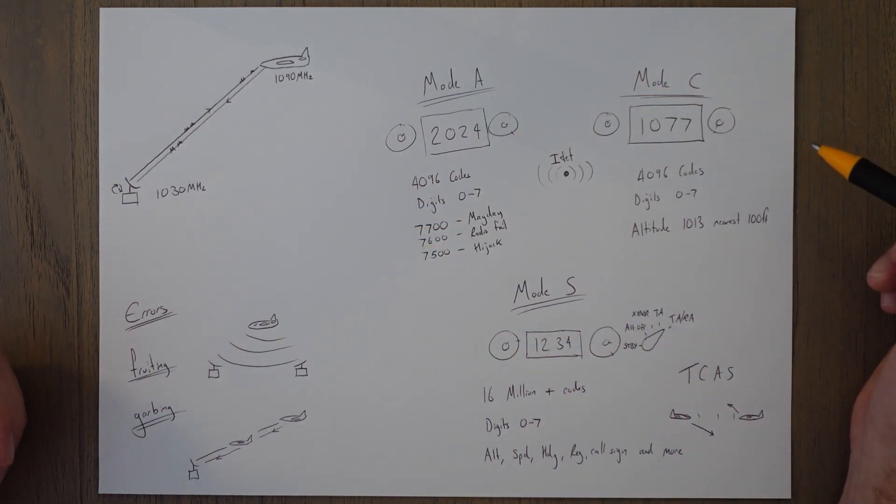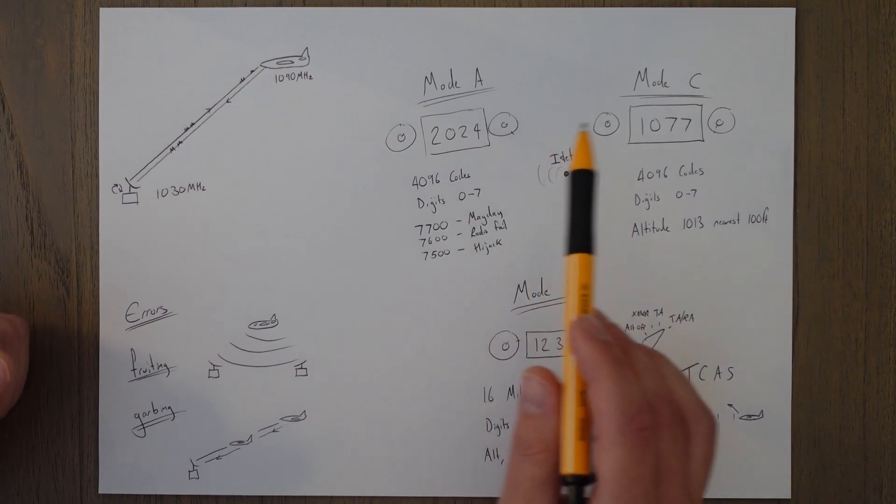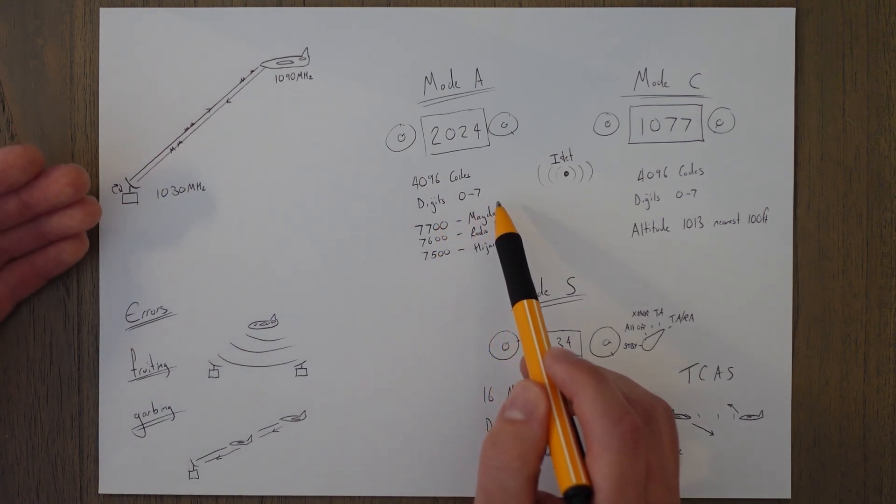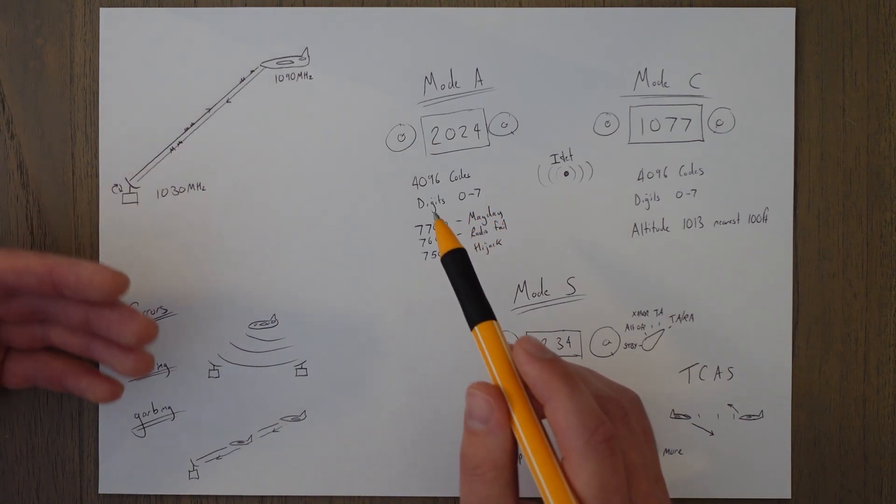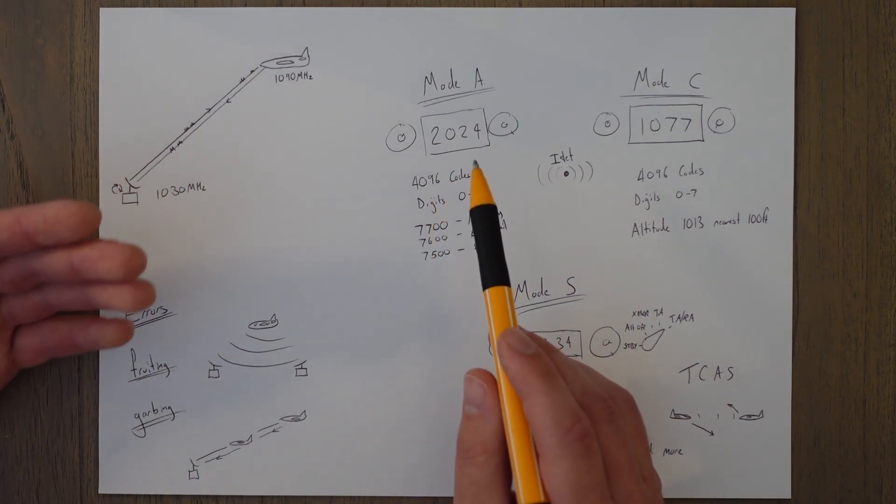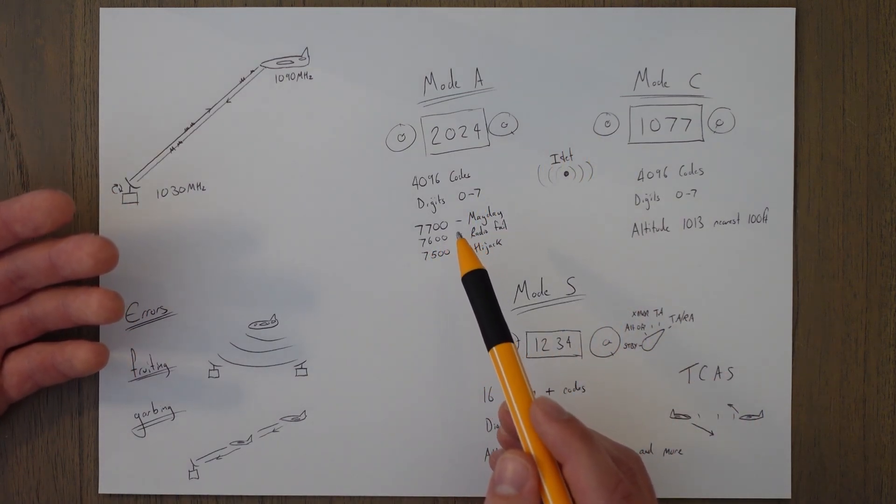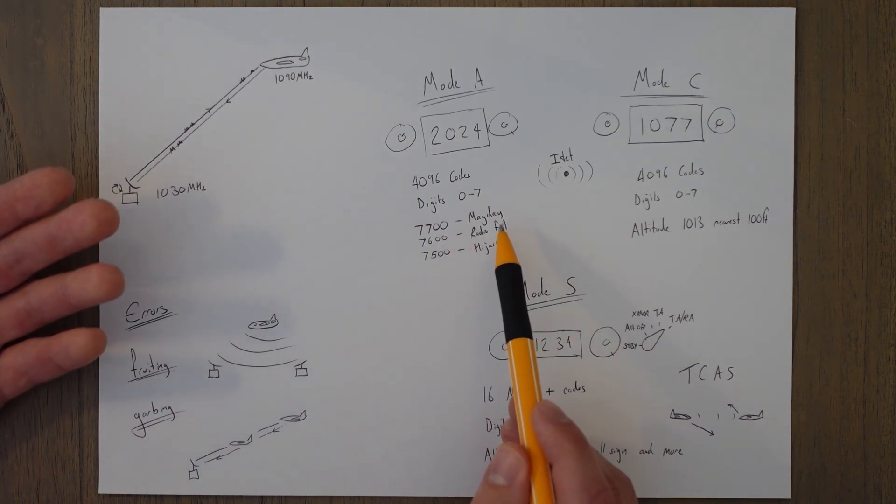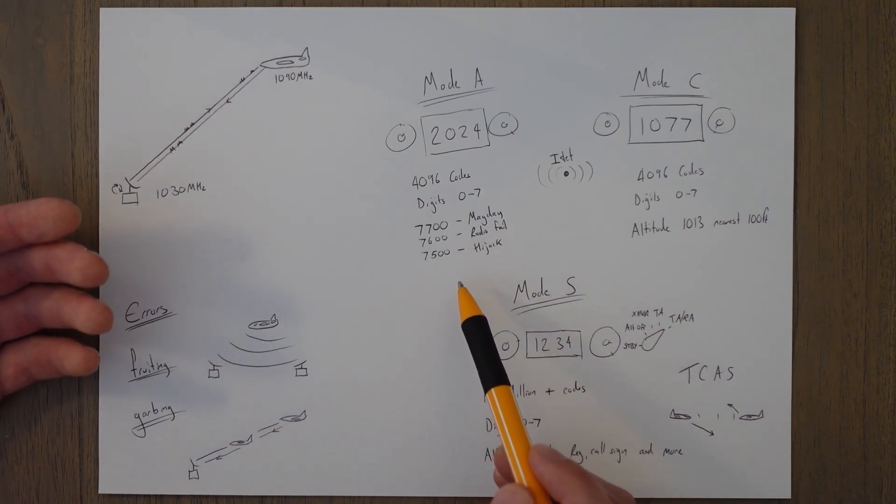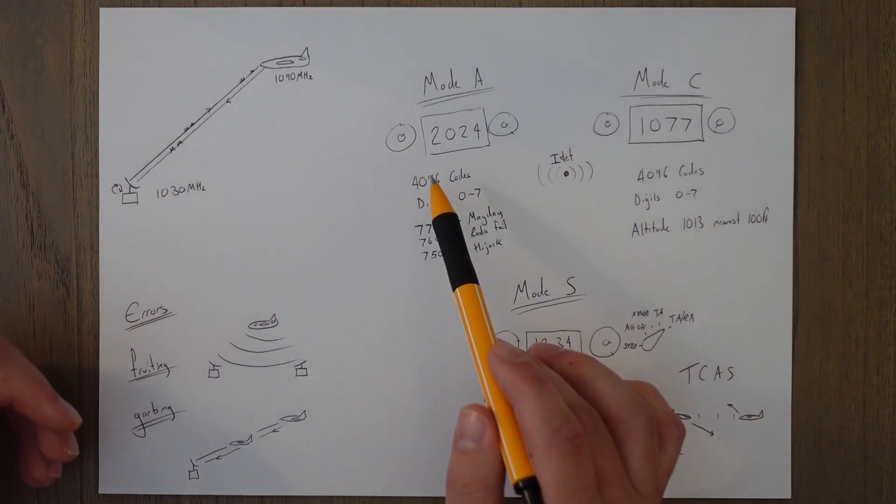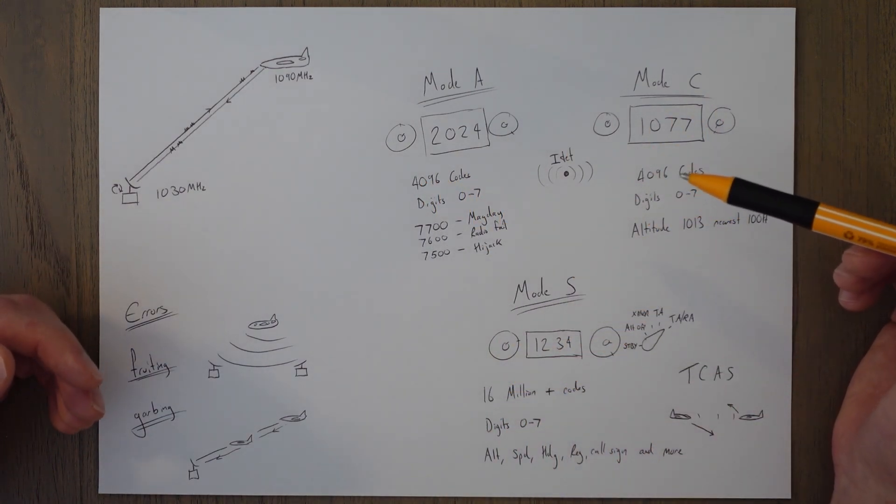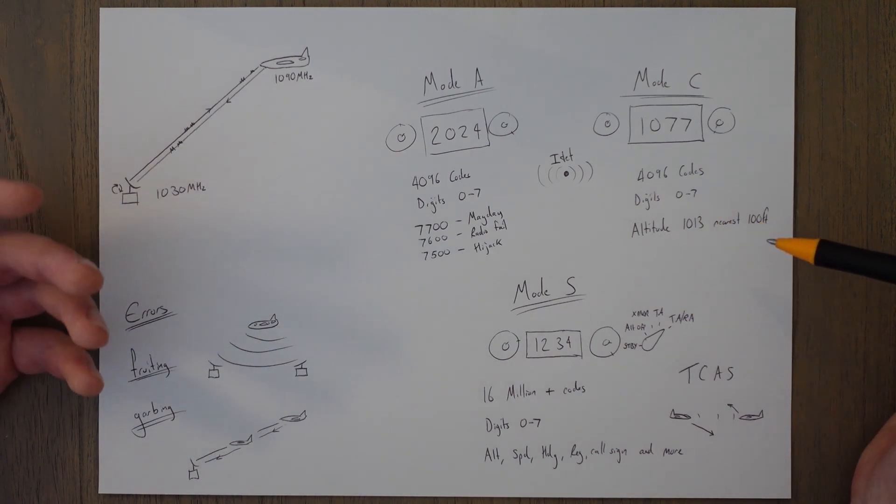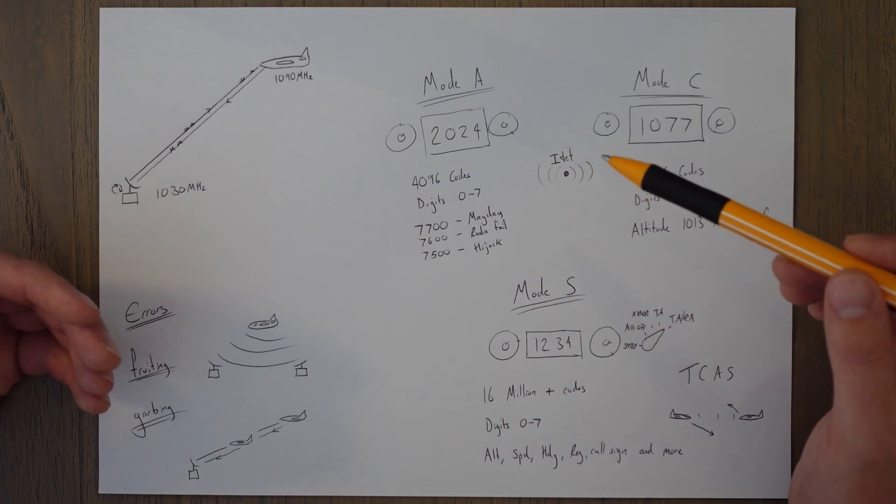You have three different modes of transponder: you've got Mode A, C, and S. A is the most basic. There's 4096 different codes we can use from using digits 0 to 7. In Mode A you just get a display on the screen with this unique code. No other information other than bearing and range is received, but you do have the functionality to set some unique codes: 77 don't go to heaven, 76 the box of tricks, and 75 taken alive, for emergencies, radio failures or communication failures, and 75 for a hijack situation. In Mode C you get the same functionality as Mode A, but there's also an altitude readout for the air traffic controllers. The altitude is a pressure altitude because it's based off of 1013 hectopascals, that's standard pressure setting, and it's rounded to the nearest 100 feet.